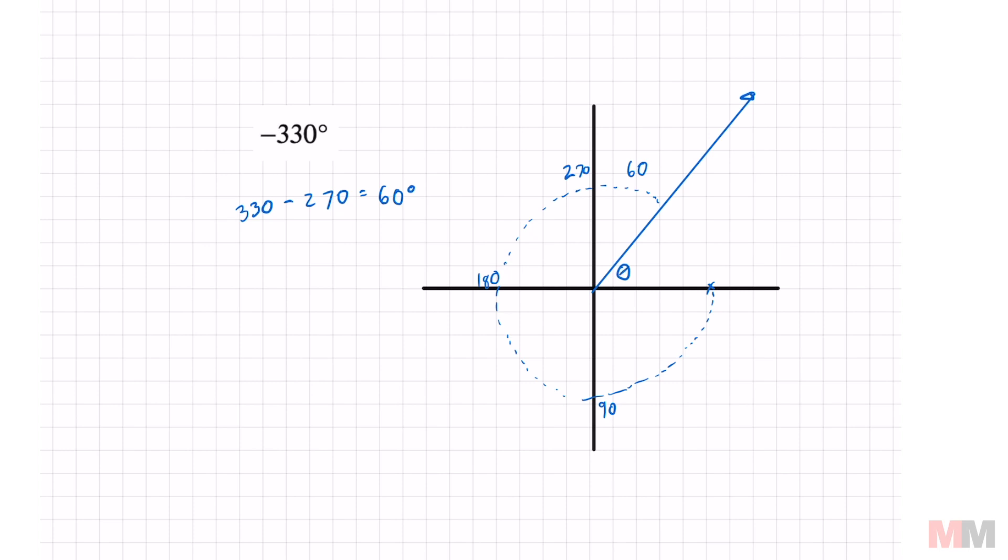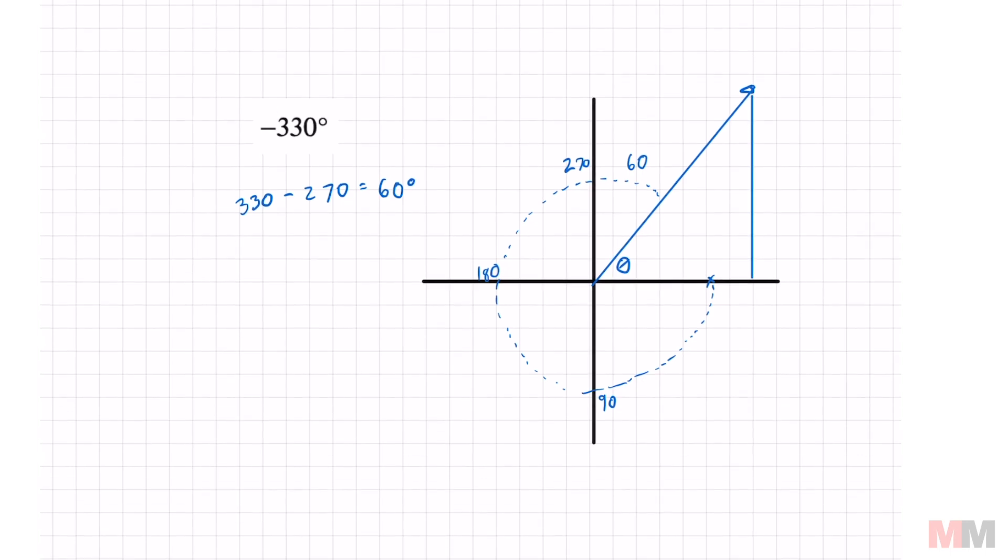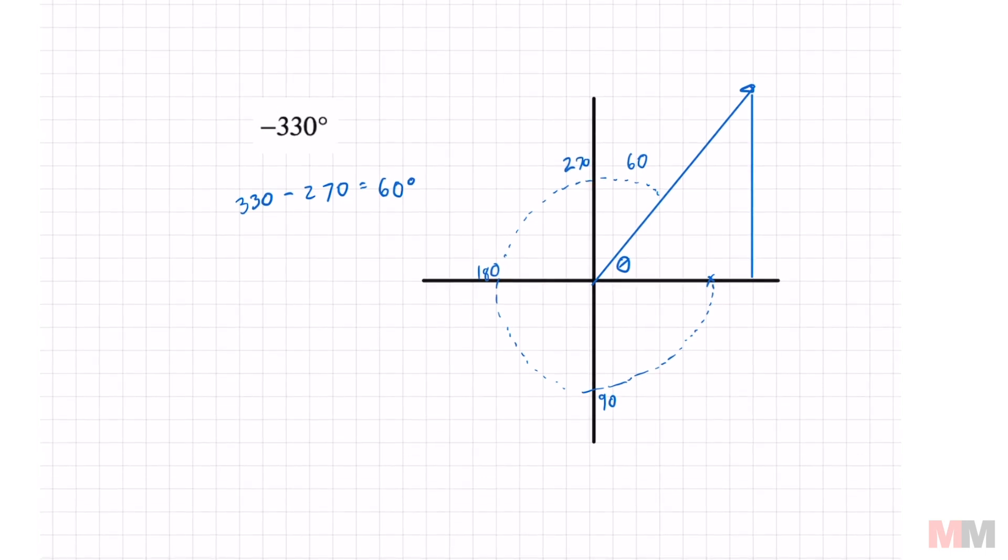And that is my terminal side. I have to find the reference angle. So your answer is not 60. Do not put 60. You just have to go from the tip of your terminal side all the way to the x-axis, just like that. And now you got to just ask yourself, in this quadrant, that equals 90, right?